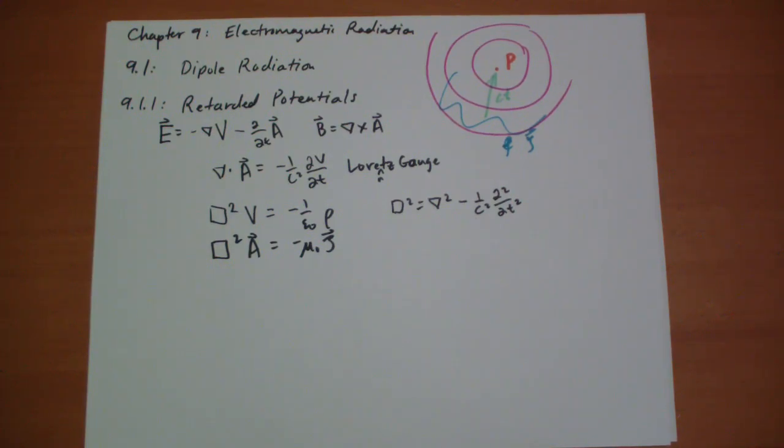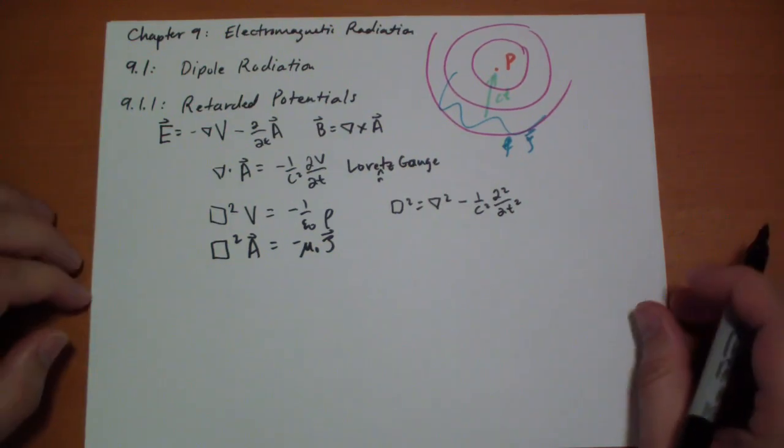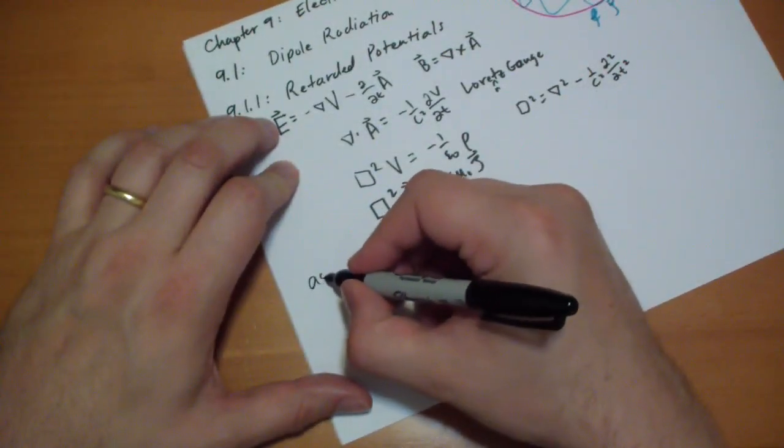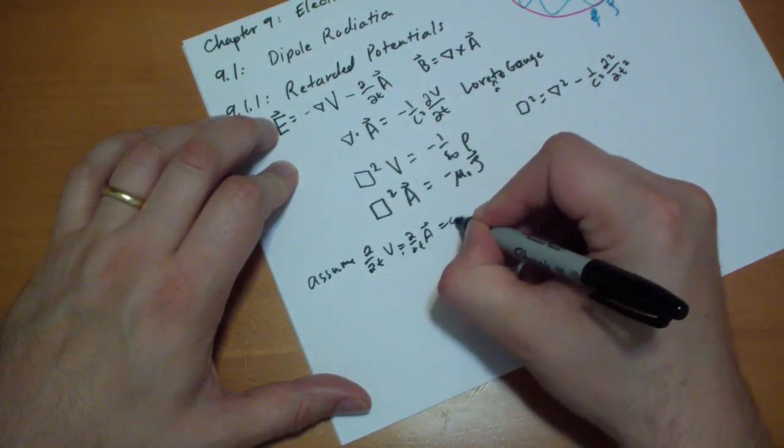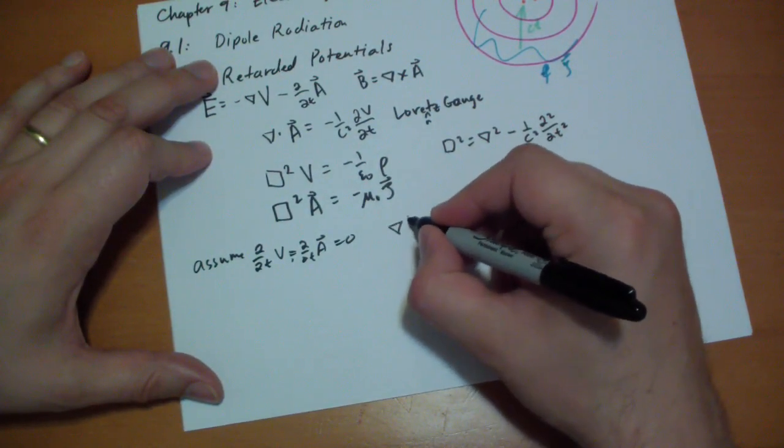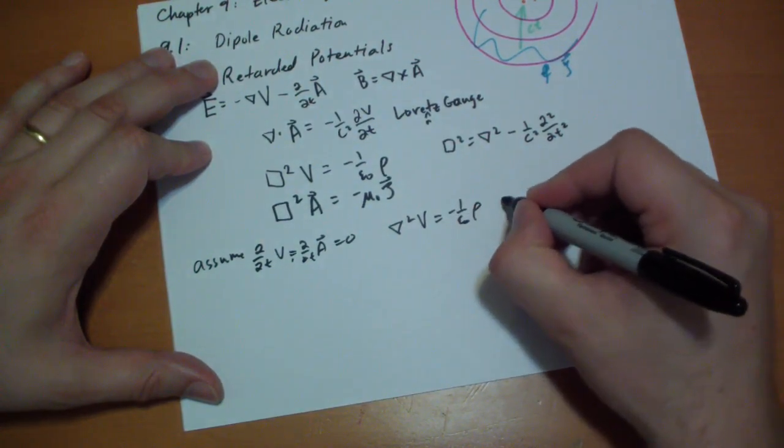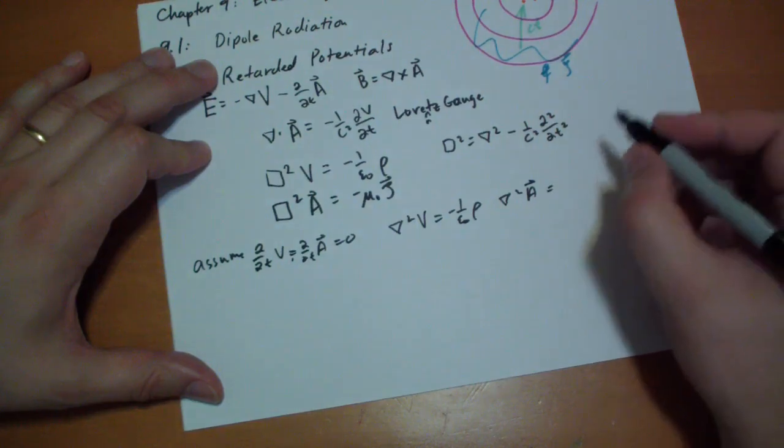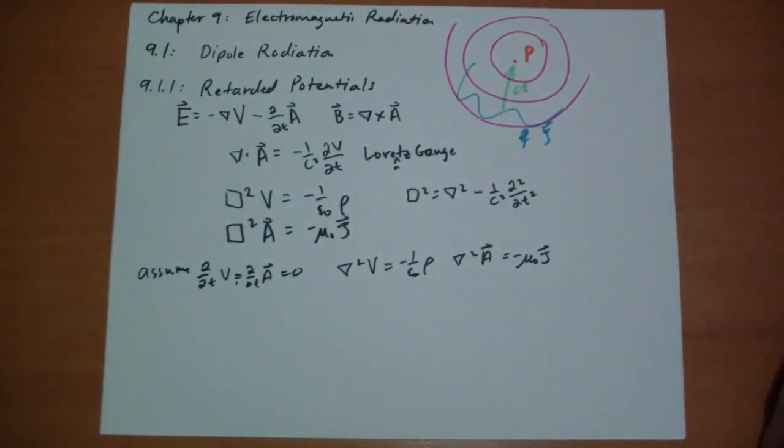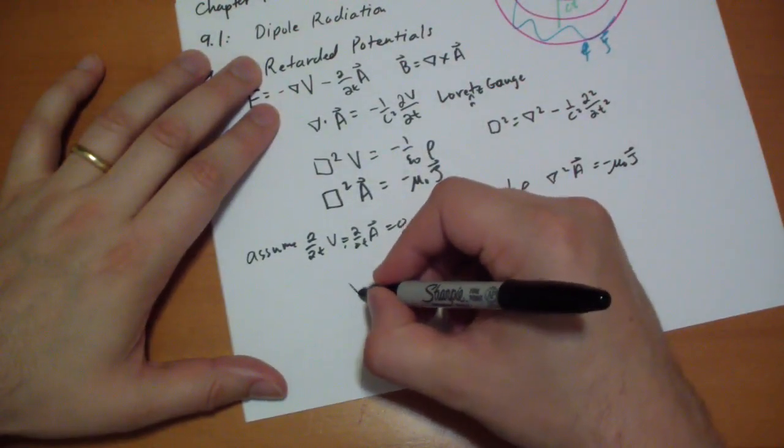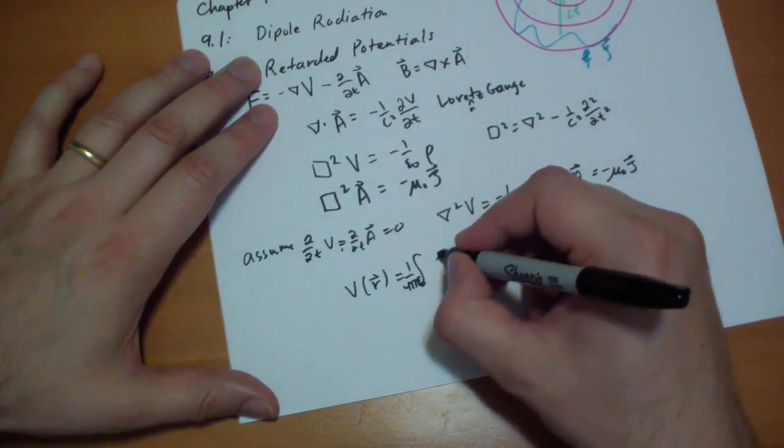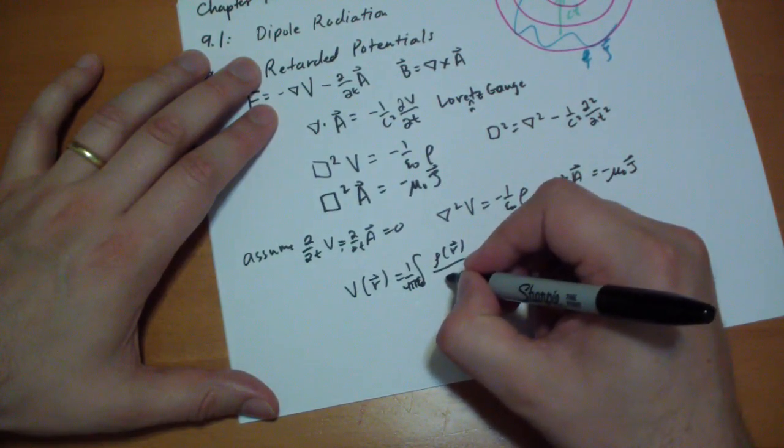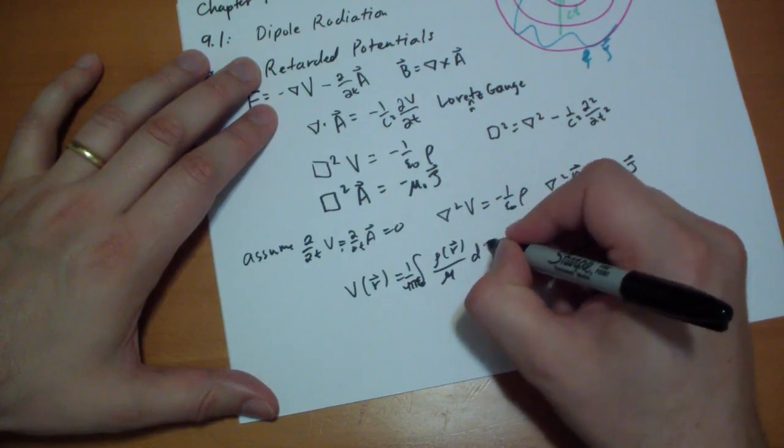If we assume, for starters, that the time derivatives of the potentials are zero, then we get the equations that you should recognize almost instantly. The Laplacian of V equals minus rho over epsilon-naught and the Laplacian of the A vector is equal to minus mu-naught-j. And those have solutions that can be written out as V at R is equal to 1 over 4 pi epsilon-naught of rho over curly r, d tau.